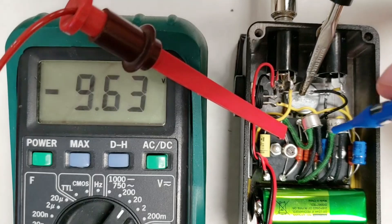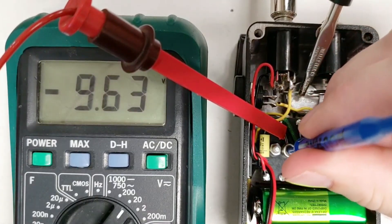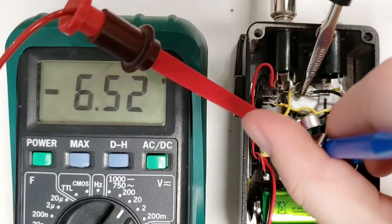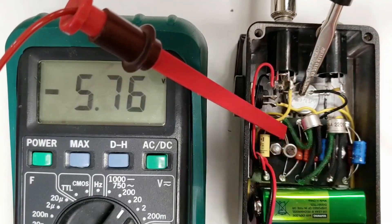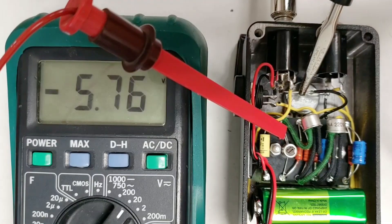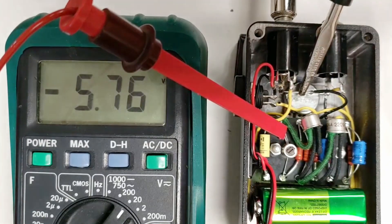With the trim pot turned all the way down, we get nearly the negative battery voltage on Q2. In this build, turning it all the way up maxes out at about negative 5.7 volts. Negative 4 to negative 5 volts is an often recommended bias range for germanium fuzz faces. The voltage in original units varied, but reported voltages tend to be in that ballpark.